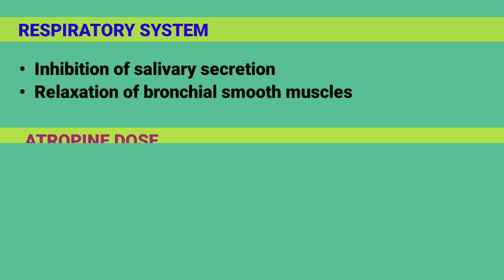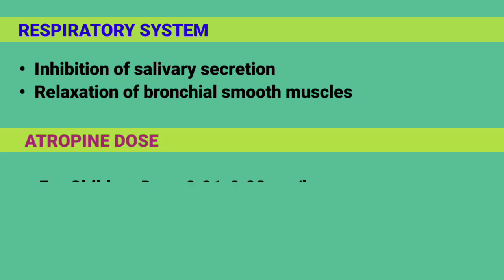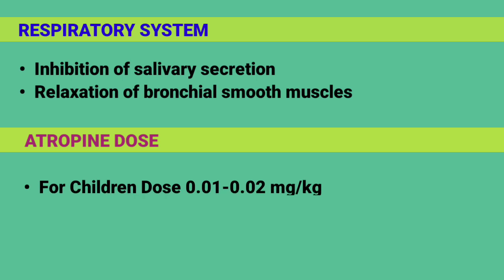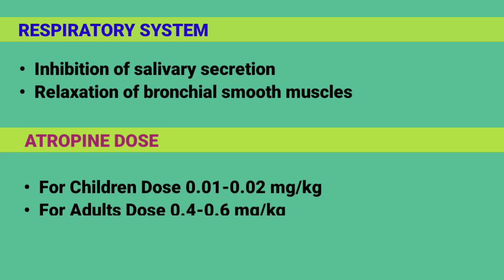Atropine doses: for children, the dose is 0.01 to 0.02 mg/kg. For adults, the dose is 0.4 to 0.6 mg/kg.